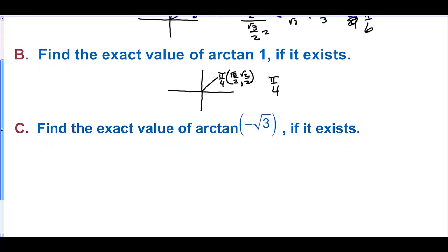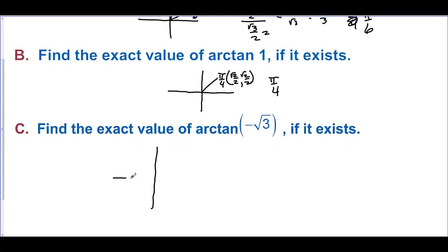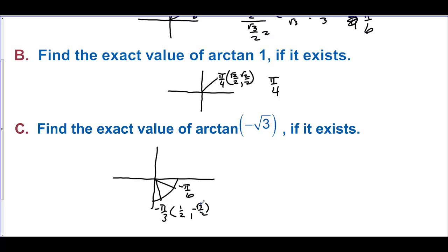Find the exact value of inverse tangent of negative square root of 3. That's a negative value, so the angle comes from quadrant 4. The choices are negative pi over 6 or negative pi over 3. At negative pi over 3, the point is one half, negative square root of 3 over 2. Sine over cosine gives negative square root of 3 over 2 over one half, and when the 2s cancel out, that is negative square root of 3. So the answer is negative pi over 3.